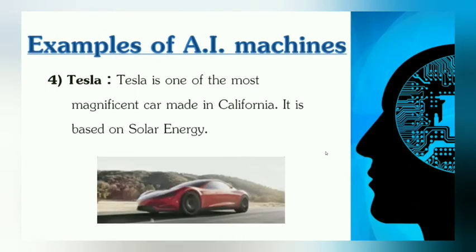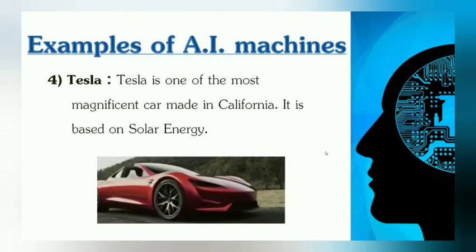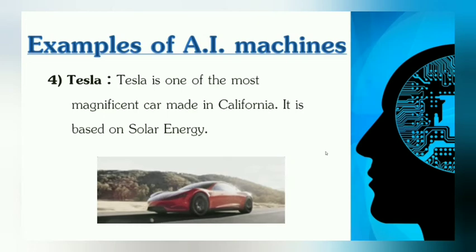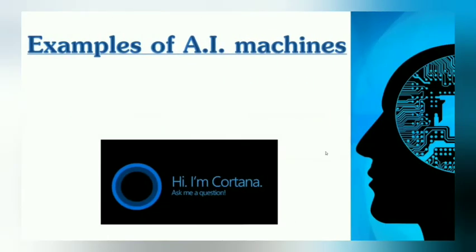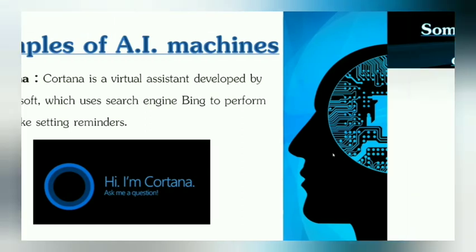The fourth is Tesla. Tesla is one of the most magnificent cars made in California. It is based on solar energy. The next is Cortana. Cortana is a virtual assistant developed by Microsoft, which uses a search engine to perform tasks such as searching reminders, finding something from Google or Bing, or looking into some app or document.